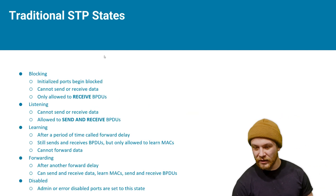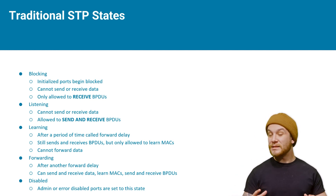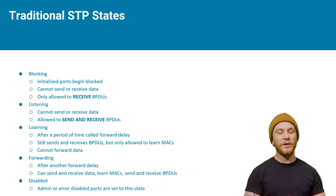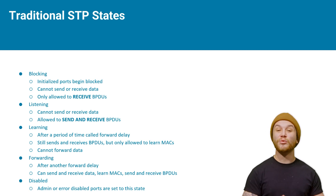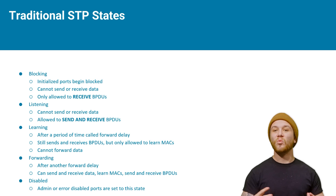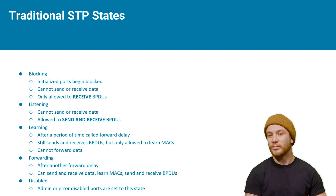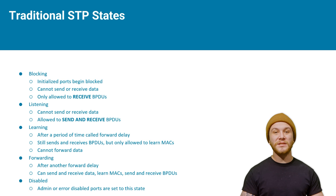Every switch port within spanning tree — this is traditional spanning tree — has a state. We've got blocking: every initialized port begins in blocked state, cannot send or receive data, but it is allowed to receive BPDUs. You want your spanning tree topology to always be aware, even if a port is blocking, whether any changes have happened, therefore allowing that port to maybe open up or continue staying closed depending on the topology.